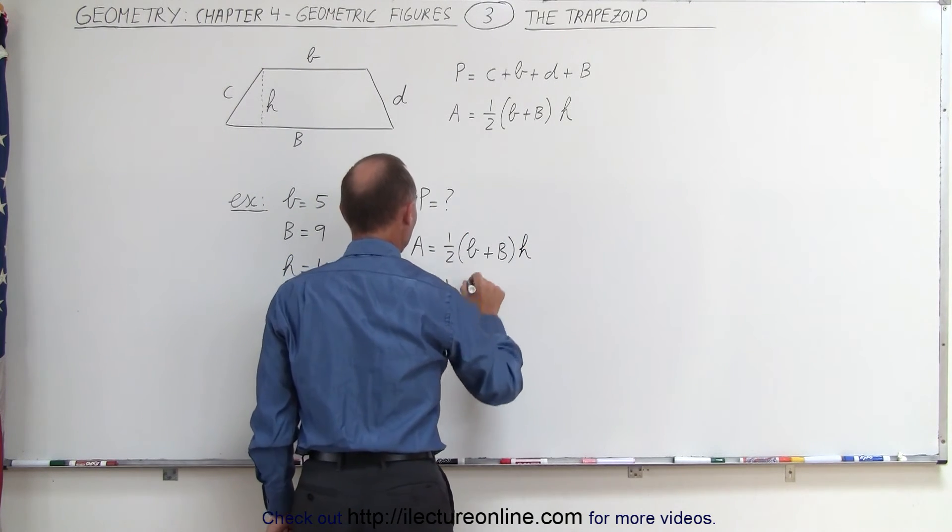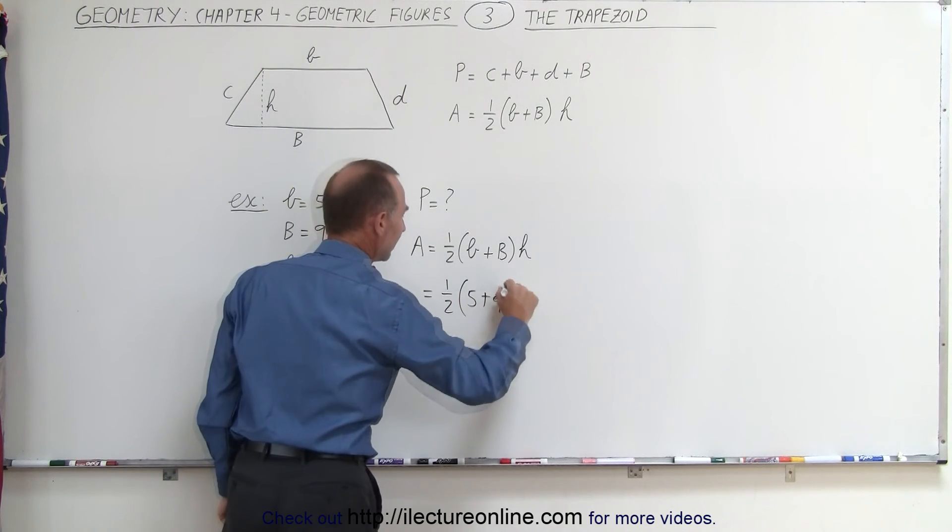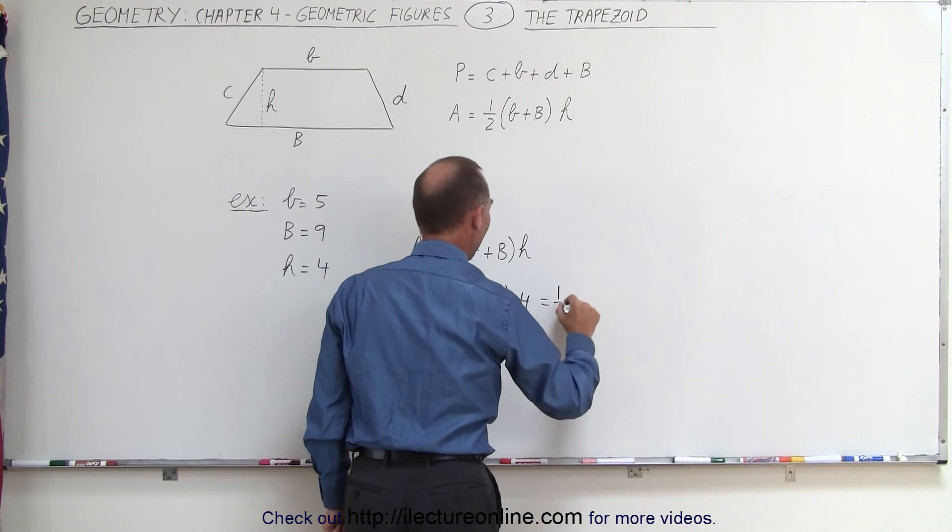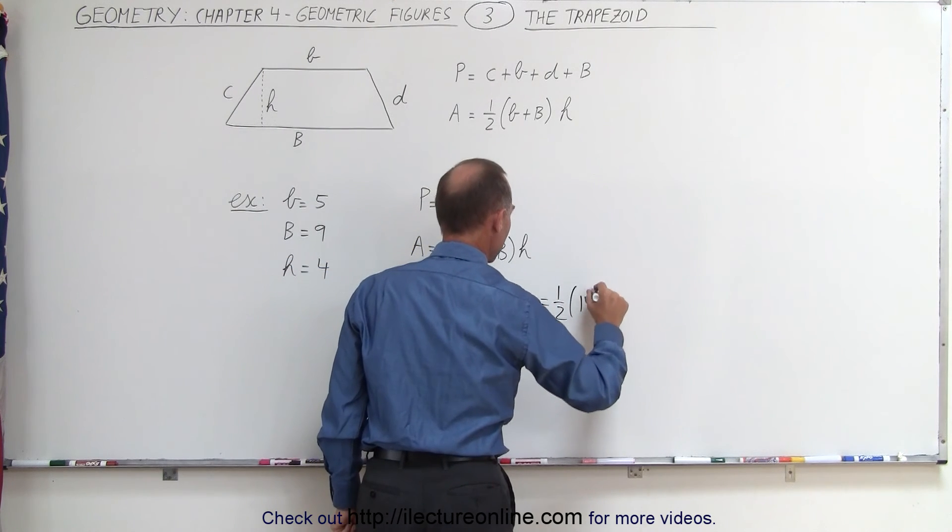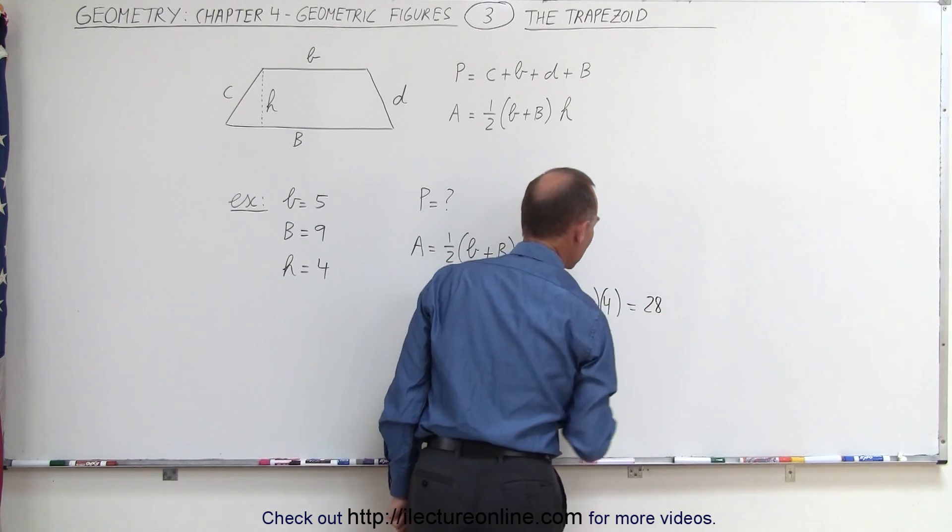So in this case it would be one half times five plus nine, multiply times the height which is four. So this becomes one half times fourteen times four, which is equal to twenty-eight.